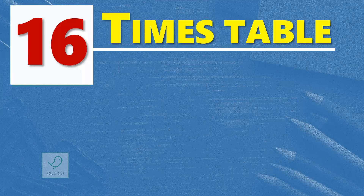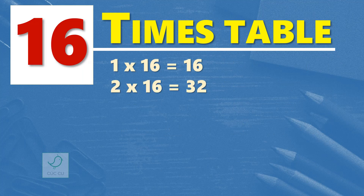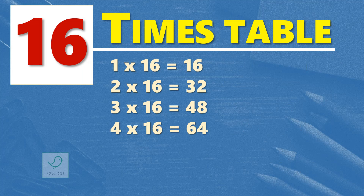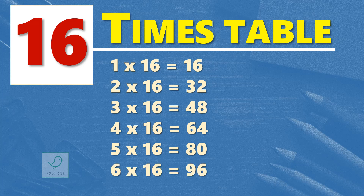16 times table. 1 times 16 is 16. 2 times 16 are 32. 3 times 16 are 48. 4 times 16 are 64. 5 times 16 are 80. 6 times 16 are 96. 7 times 16 are 112. 8 times 16 are 128.